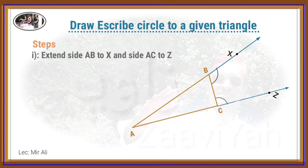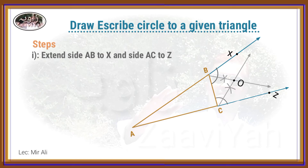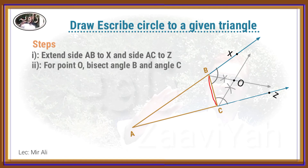The circle is linked to the center and radius. The center is linked to the center and radius, which gives us the point P.